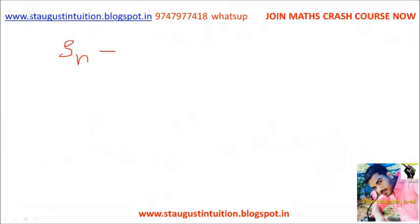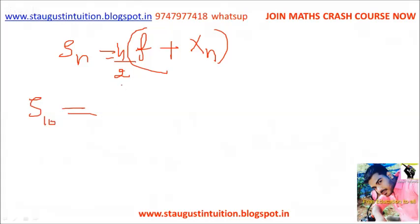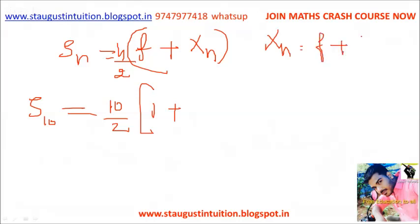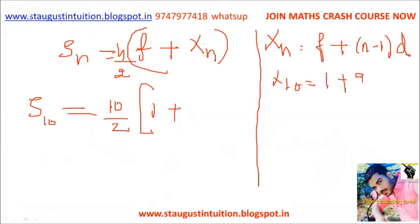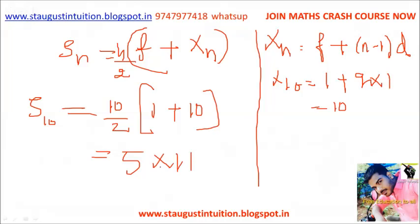S is equal to first term plus last term, into n by 2. That's the same formula. Then S equals first term 1, plus last term which equals f plus n minus 1 into d. That is 1 plus 9, equal to 10. So again it becomes 5 into 11. Any one of the 3 methods you can do. Clear?